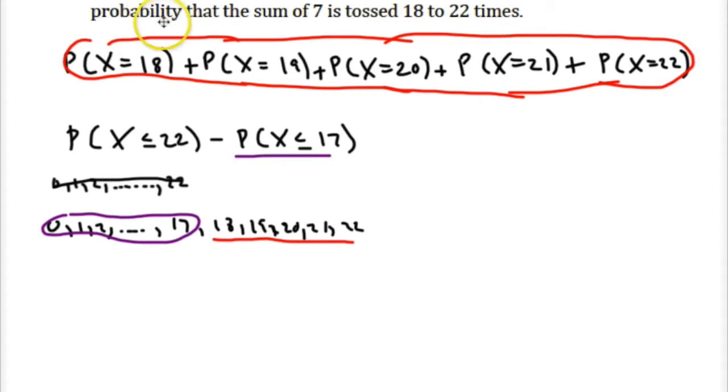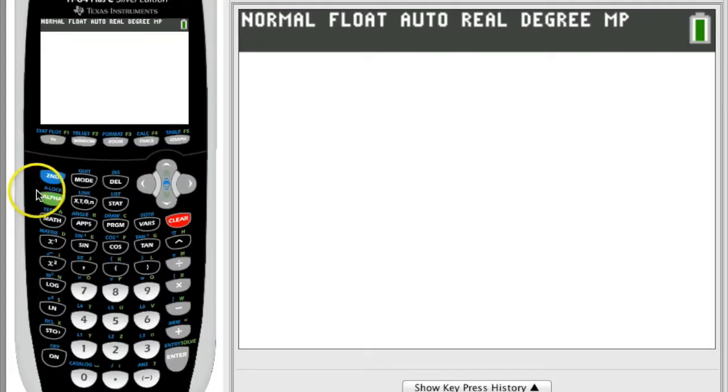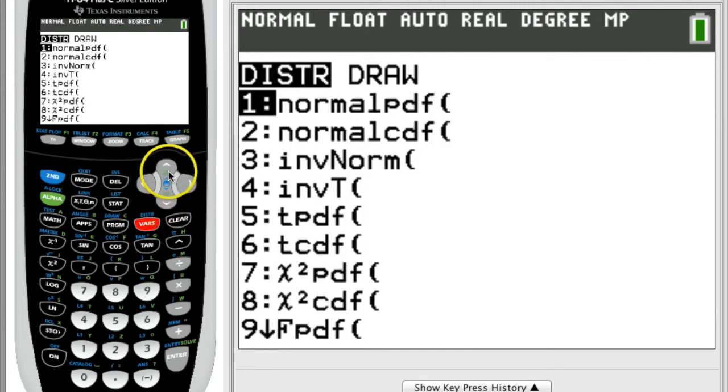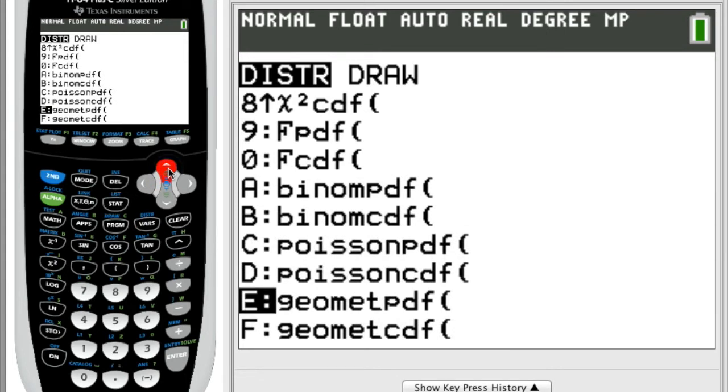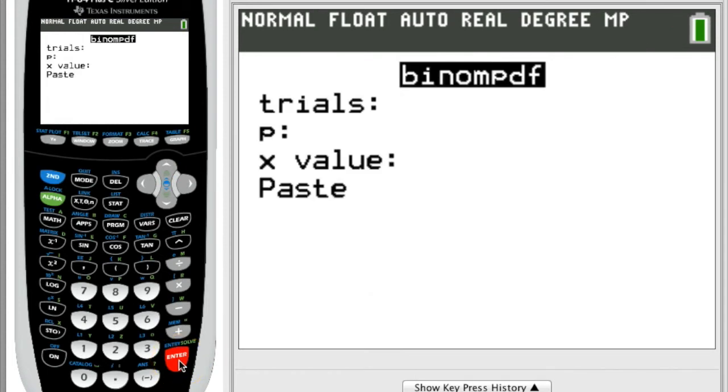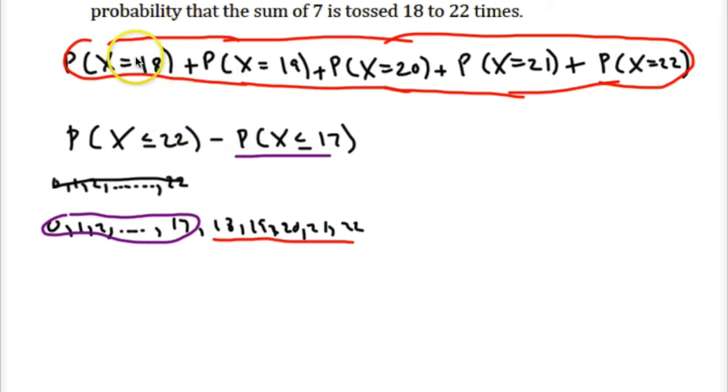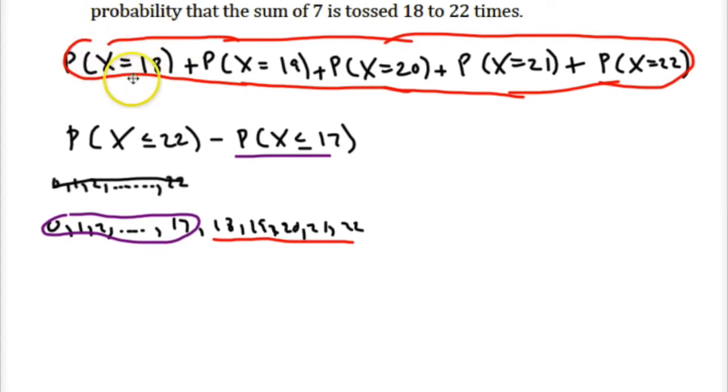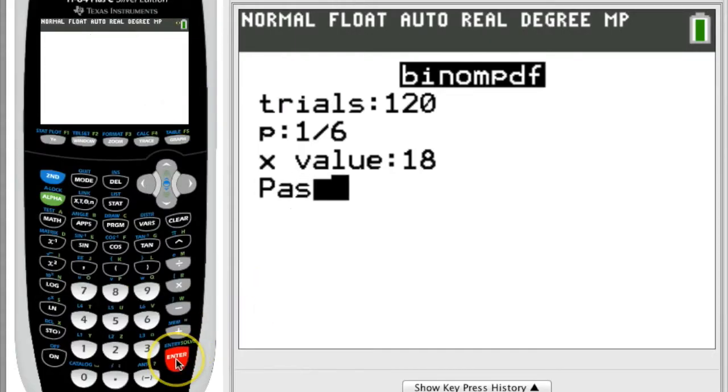So now, just to show that quickly, I'll pull up this graphing calculator, and we can go to second distribution. And we want the binomial, let's do it both ways here. So, we'll do binomial PDF. The number of trials is 120, and the probability is one out of six. And we want this to happen from 18 to 22. So, this time we're just doing the individual case of probability that X equals 18, and enter.